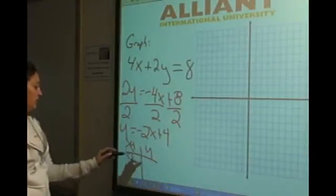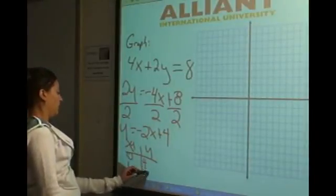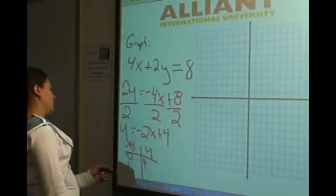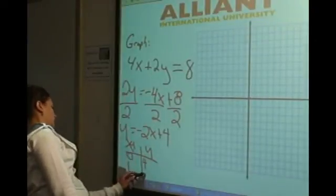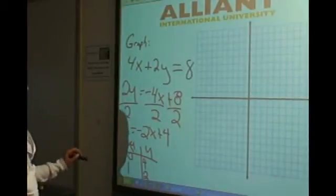If x equals 0, then we have 4. If x equals 1, then we have negative 2 plus 4, which equals 2. So let's graph those points.